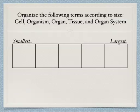Let's see if you can do it now. Try and organize the following terms according to size, starting with the smallest on the left and working your way up to the largest on the right. The words to use are: cell, organism, organ, tissue, and organ system. This organizer can be used as a piece of evidence, as long as you include the term, the definition, and an example.